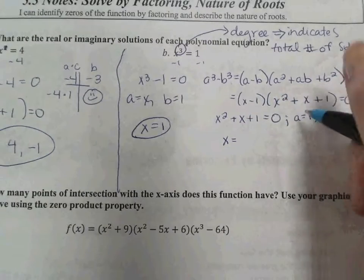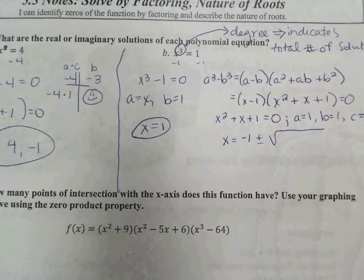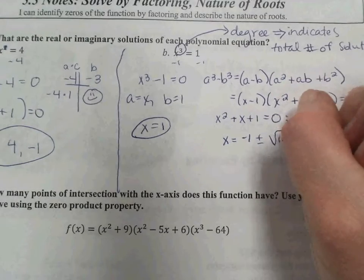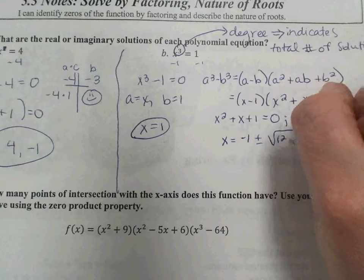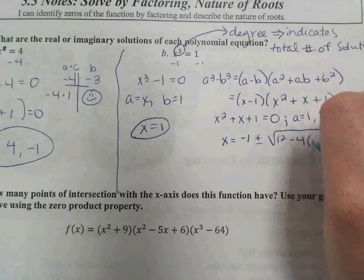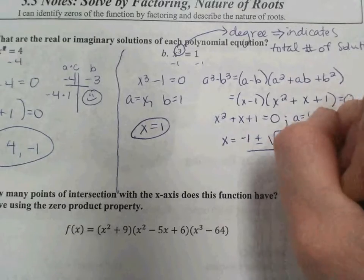So x equals negative 1 plus or minus the square root of b squared. They're all 1, so it kind of makes it easier and more confusing at the same time. b squared minus 4 times a times c all over 2a.